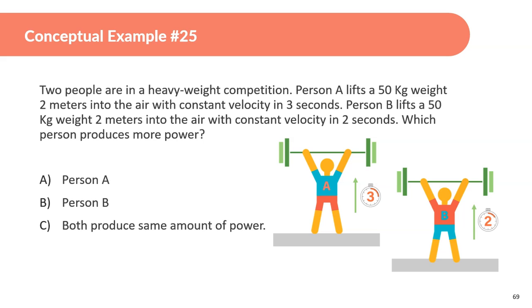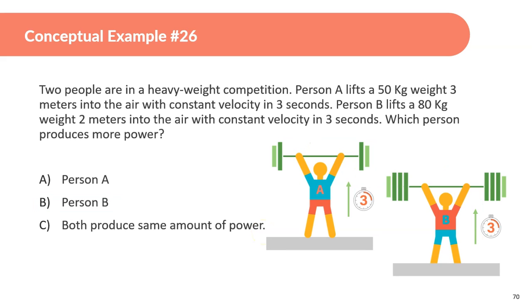Next question. Two people are in a heavyweight competition. Person A lifts a 50 kilogram weight 2 meters into the air with constant velocity in 3 seconds. Person B lifts a 50 kilogram weight 2 meters into the air with constant velocity in 2 seconds. Which person produces more power? They're both going to be lifting with the same amount of force, and they both lift the same amount of distance. So, they both do the same amount of work. However, person B does it in a shorter time. Because they do it in a shorter time, they produce more power. Person B produces more power.